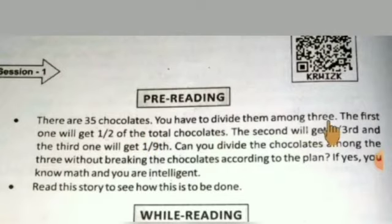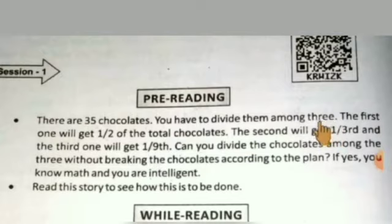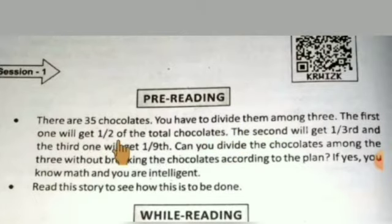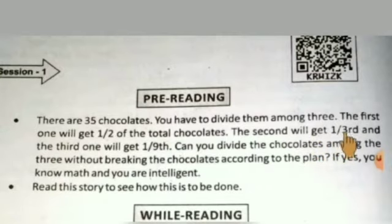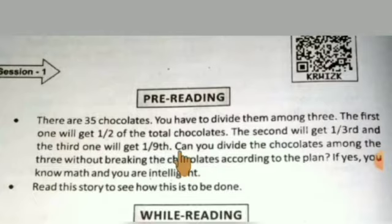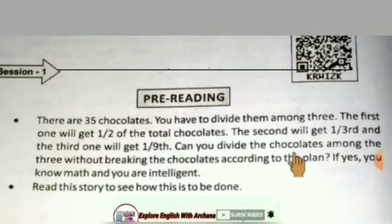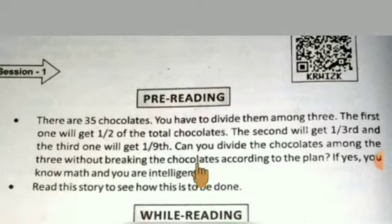You have to divide them among three. The first one will get half of the total chocolates. The second one will get one third. Can you divide the chocolates among the three without breaking the chocolates according to the plan?